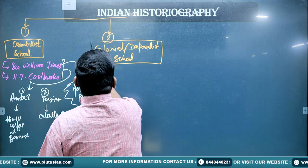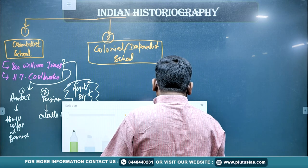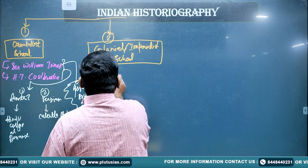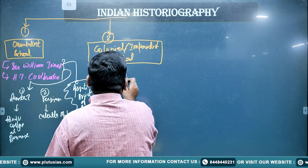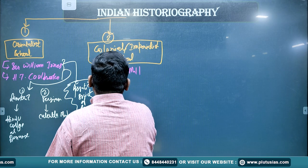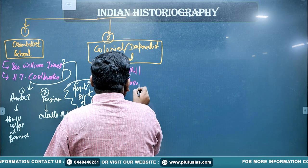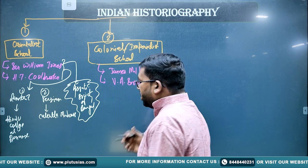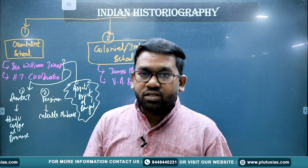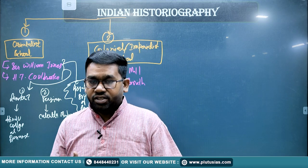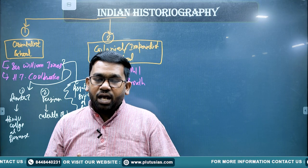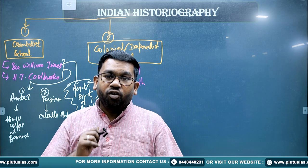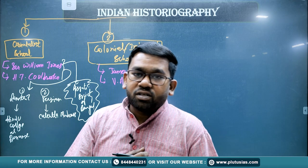In the Colonialist or Imperialist school, the most important persons are James Mill and V.A. Smith. These two historians focused on a very different topic — they argued that we should not focus on Oriental education but on Western education in India. James Mill wrote 'The History of British India' in 1817 in three volumes. In this work, he tried to identify Indian history into three parts: ancient, medieval, and modern.